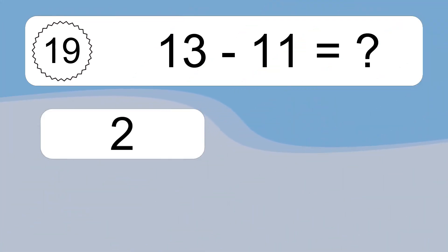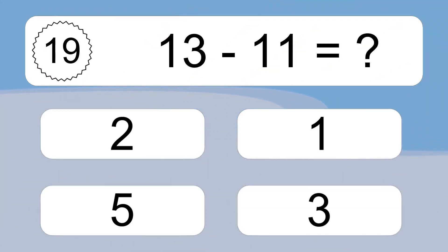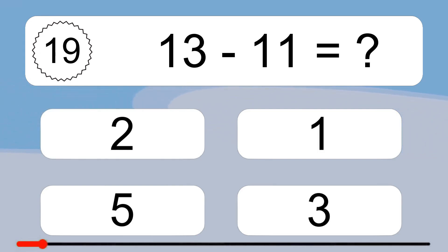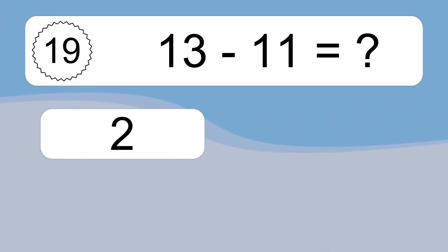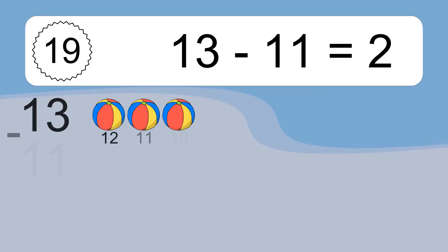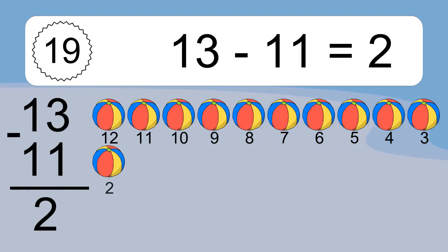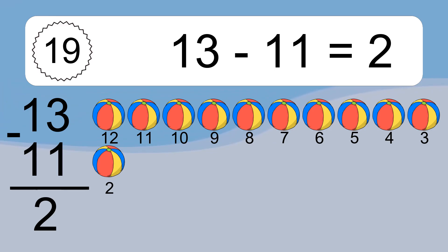13 minus 11 equals what? 13 minus 11 equals 2. Let's count it. 12, 11, 10, 9, 8, 7, 6, 5, 4, 3, 2.